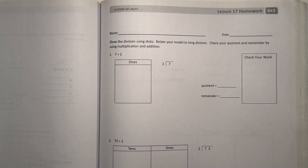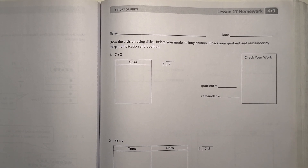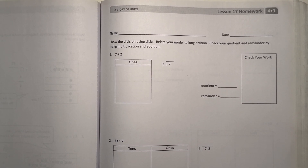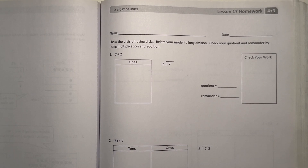Hey guys, Arthur here. Today I'm doing the Eureka Math Grade 4 Module 3 Lesson 17 Homework. So let's get started. Show the division using disks. Relate your model to long division. Check your quotient and remainder by using multiplication and addition.